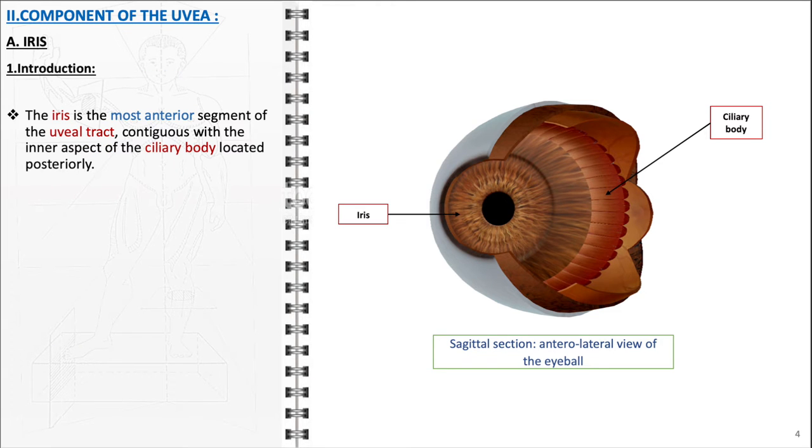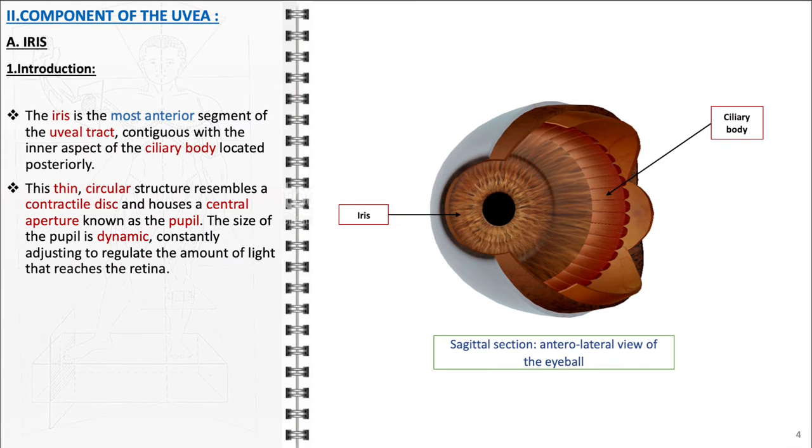We will now detail the components of the uvea, beginning with the iris. The iris constitutes the most anterior segment of the uveal tract and is contiguous with the inner aspect of the ciliary body located posteriorly. The iris itself is a thin, circular structure, akin to a contractile disc. It features a central aperture known as the pupil.